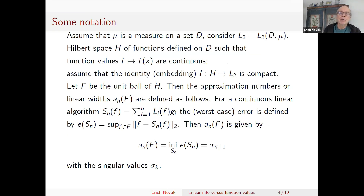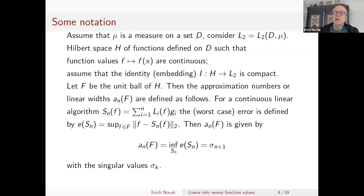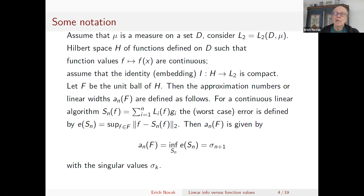Let me introduce notation. We have a Hilbert space H of functions and assume that function evaluation is a continuous linear functional. We assume the Hilbert space is compactly embedded into L2, and for the worst case error we study the unit ball of H, which I always call F — we take the worst case error with respect to this set F. The approximation numbers, also called linear diameters, are defined as follows.